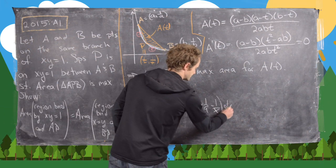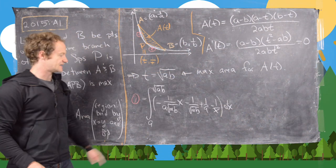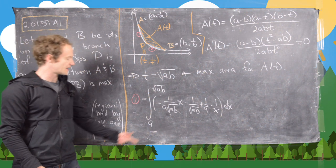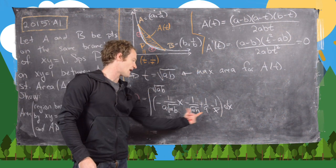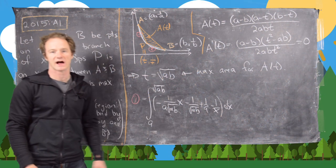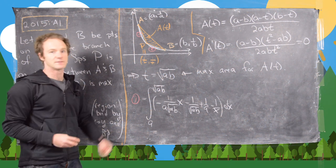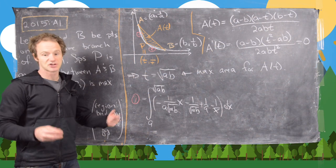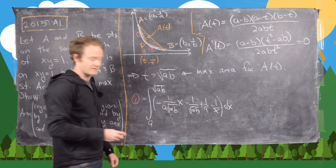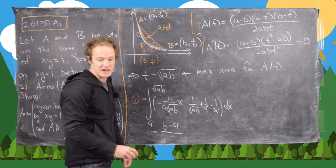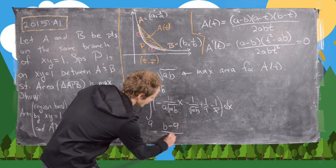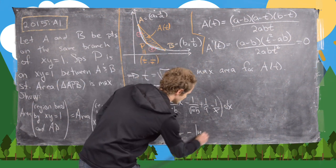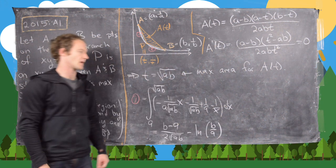Taking this definite integral — for the linear part it's straightforward, and for 1/x we get a natural log — after algebraic manipulation using natural log rules, Area 1 equals (B − A)/(2√(AB)) minus the natural log of B/A.